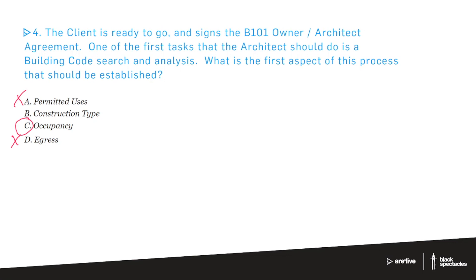The second thing you'll do is make your best determination of construction type. Together, occupancy and construction type allow you to determine what fire-rated walls you'll need, what kind of egress is required, how large a building you're allowed to build, and how large each floor can be. All of that information flows from the building code by combining occupancy with construction type. So we start with occupancy, then go to construction type.